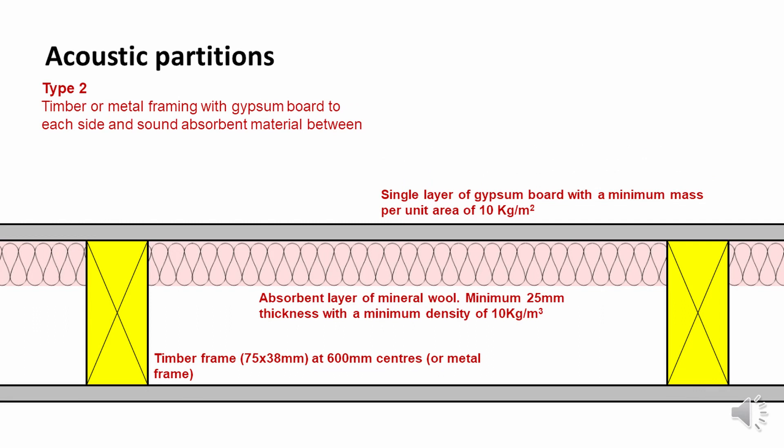Type two is similar — we have timber or metal framing, but this time we've only got one board to the outside of each face, plus some insulation internally. We still need the dense board, so it's got a minimum mass per unit area of 10 kilograms per meter squared. The mineral wool within the wall requires a minimum depth of 25 millimeters and a density of 10 kilograms per meter cubed.